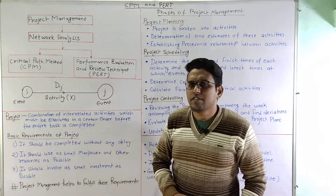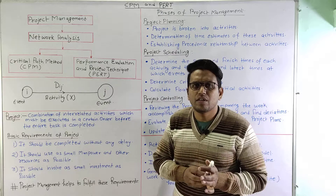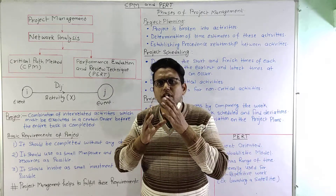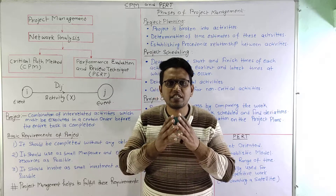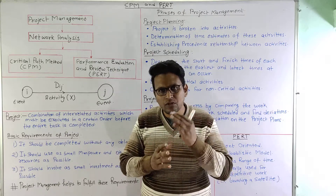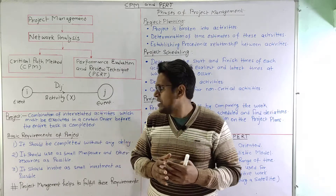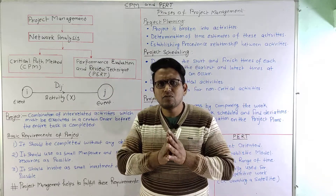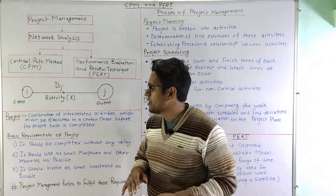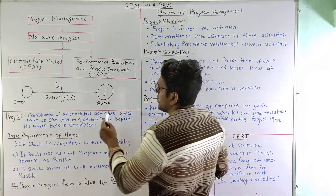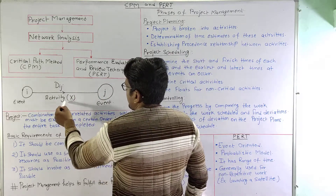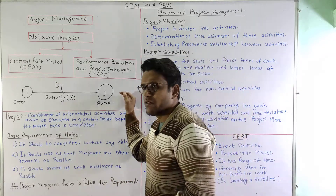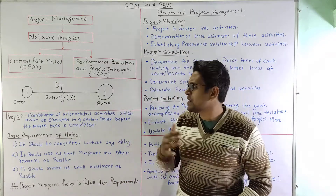The third term is network. A network is the graphical representation of logically and sequentially connected arrows and nodes, which represent activities and events. Networks are also known as arrow diagrams. By combining various activities we can form a network. These are the terms we are frequently going to encounter.